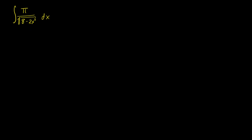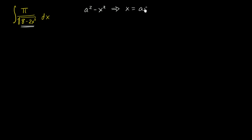Let's see if we can evaluate this indefinite integral. The clue that trig substitution might be appropriate is what we see right over here in the denominator under the radical. In general, if you see something of the form a squared minus x squared, it tends to be a pretty good idea — not always, but it's a good clue — that it might be a good idea to make the substitution x is equal to a sine theta.